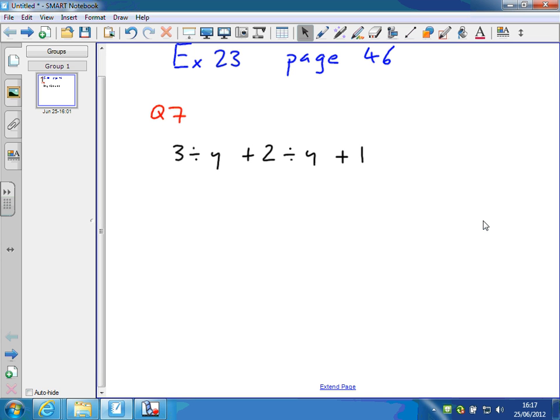So first of all, again, 3 divided by y is far more likely to be written as 3 over y like that. And 2 divided by y is more likely to be written like that plus that. So that's the way you're likely to see it written.